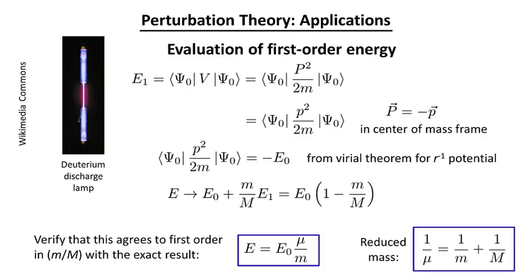So now we can complete the calculation, the first order, in little m over big M. So the energy is just E0 plus lambda E1, and E1 is minus E0, so we get this result for the energy level shift.